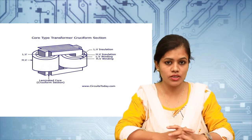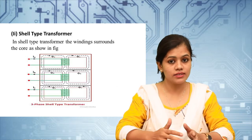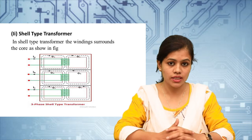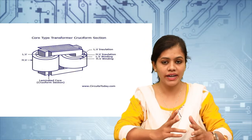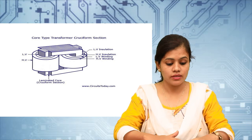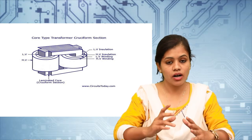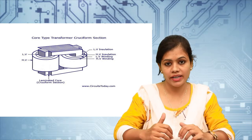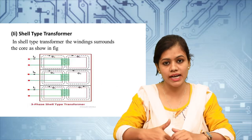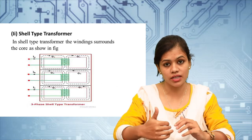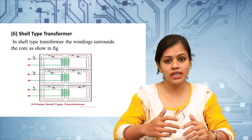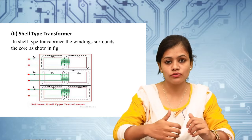In a core type transformer two windings are used, due to which there is only one magnetic path provided for passing the flux. In a shell type transformer three windings are used, due to which there are two magnetic paths provided for passing the flux.